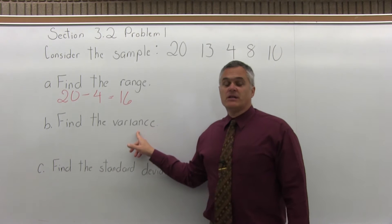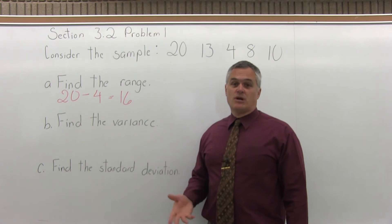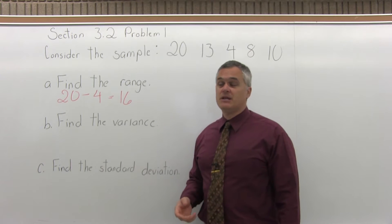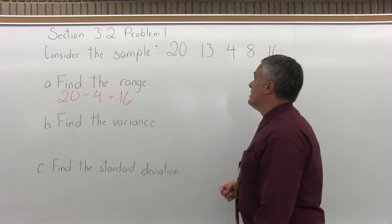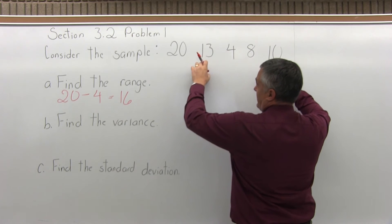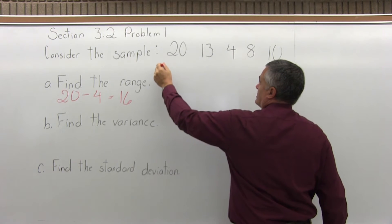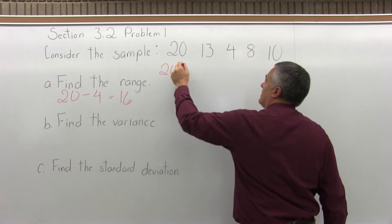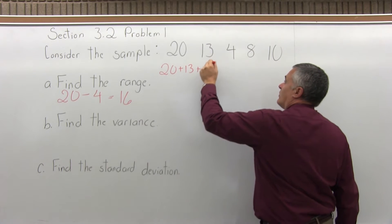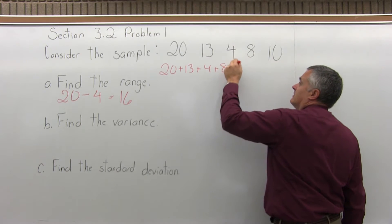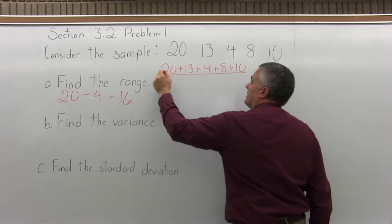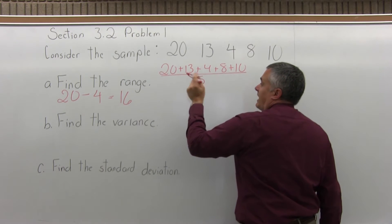Now for the variance, finding the variance is a four-step process. Step 1 is find the mean and label it x-bar. So the mean, or what most people would call the average, we're going to add these numbers together, divide by 5 because there are 5 numbers. So 20 plus 13 plus 4 plus 8 plus 10, divided by 5 because there are 5 data values.